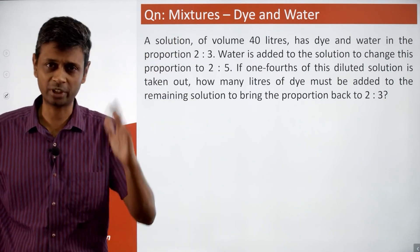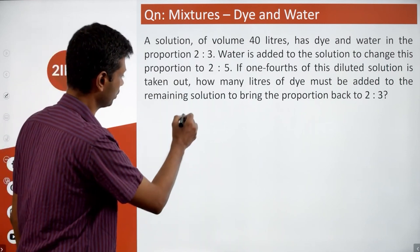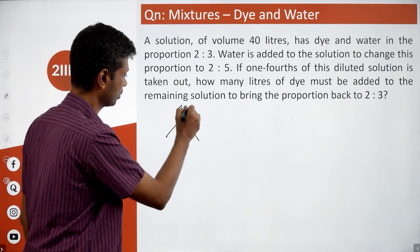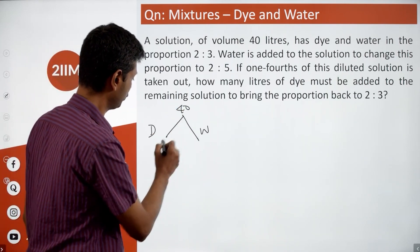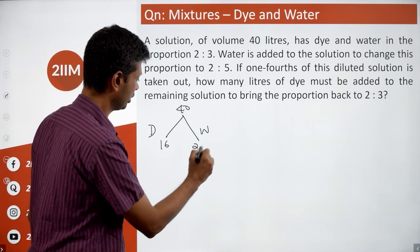A proper sitter. Let's go step by step. 40 liters, dye and water, so I'm going to write down: 40, dye, water in the ratio 2 is to 3. Two-fifths of this, three-fifths of this: 16 and 24.